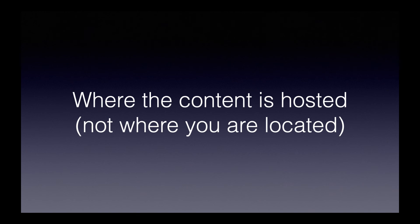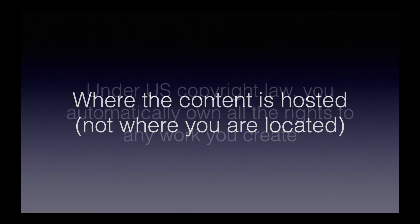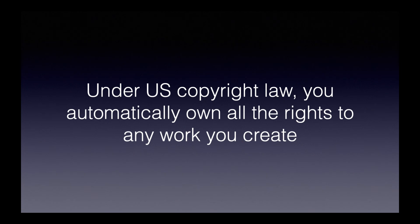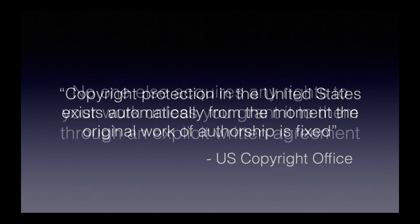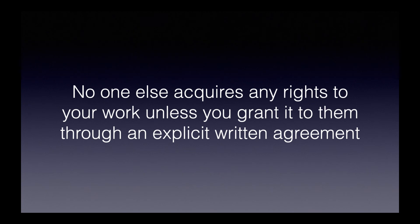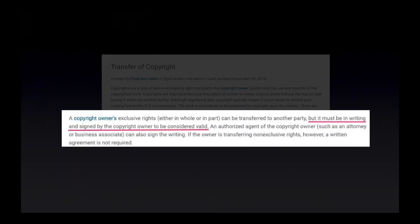There are two aspects of US copyright law that are relevant here. Firstly, under US copyright law, a person automatically owns all the rights to work they create. Your copyright comes into existence the moment you create a piece of original work. When that work is fixed — for example, by publishing it on a website — your copyright is created. In the words of the US Copyright Office: copyright protection in the United States exists automatically from the moment the original work of authorship is fixed. Secondly, no one else acquires any rights to that work unless you grant it to them through an explicit written agreement, as stated by the website Find Law: a copyright owner's exclusive rights, either in whole or in part, can be transferred to another party, but it must be in writing and signed by the copyright owner to be considered valid.